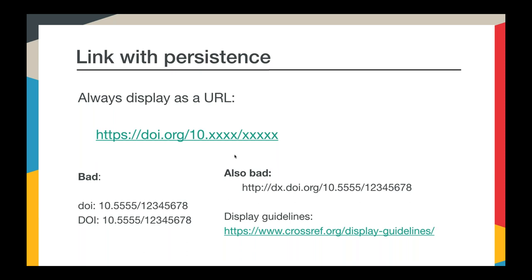You may see DOIs represented differently on other member sites as our guidelines have evolved over the years and not everyone is caught up. In the past, we recommended the prefix dx.doi.org, but we've moved to https and the much shorter prefix doi.org. In the very distant past, DOIs were represented as 'DOI:' but we've moved far away from that. Since persistent linking is such an important function of the DOI, it's so important that everyone knows that a DOI is a URL and that they can use that URL.